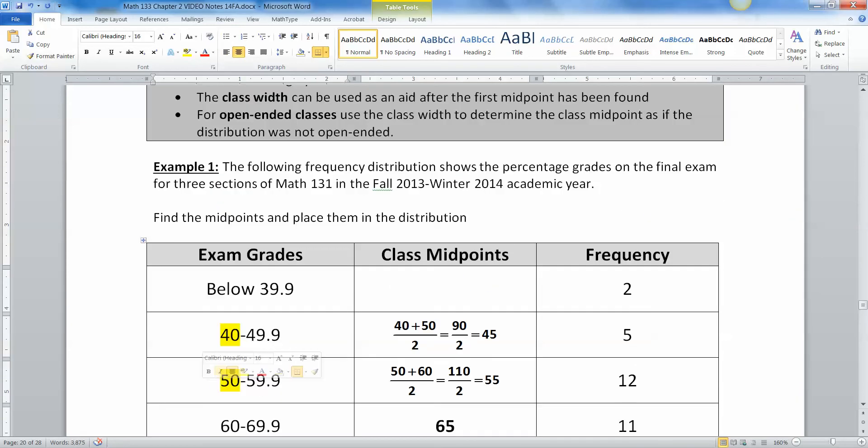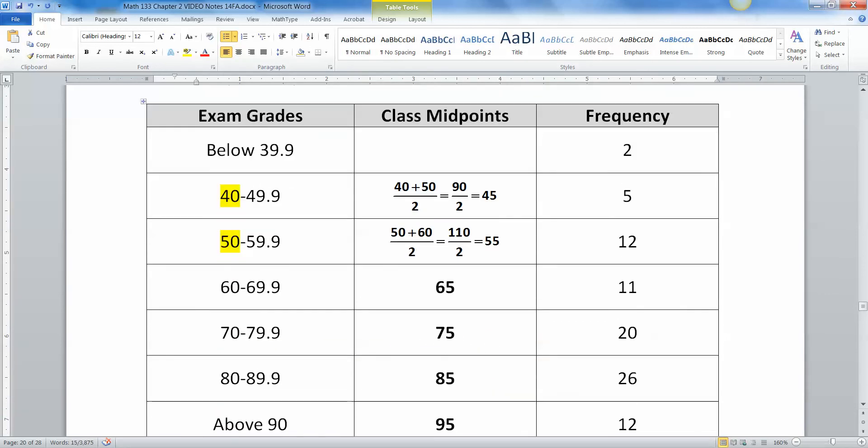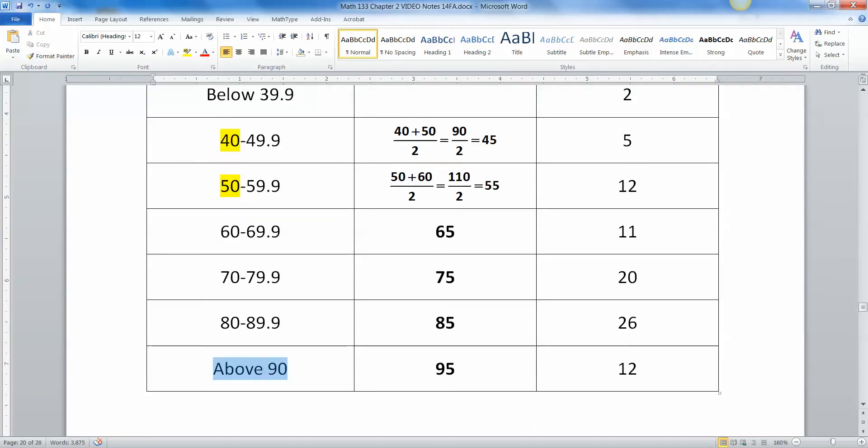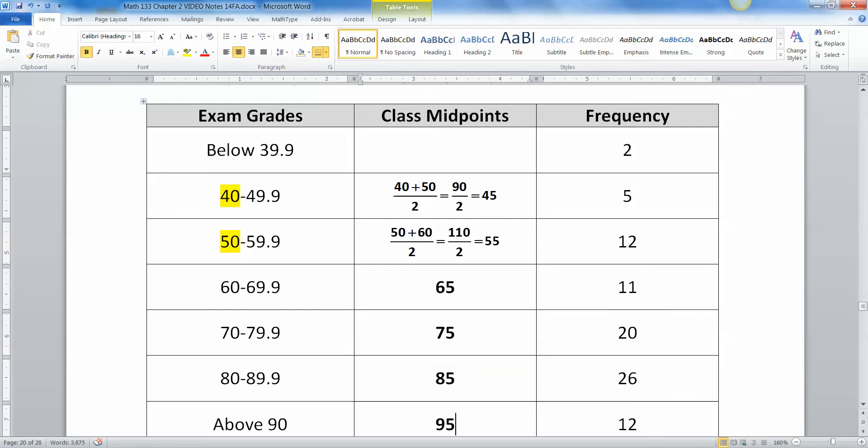Now notice the last one. With open-ended classes, you use the class width to determine that class midpoint, as if it wasn't open-ended. So you pretend, I don't care that this is everything above 90. I'm just going to keep using that 10, 10, 10, and get my number. And by the same token, it was open-ended on the low end. So I'm going to take that 10 and subtract it off, and I'm going to get 35.